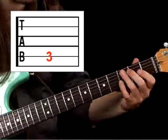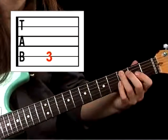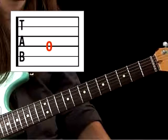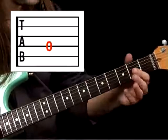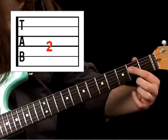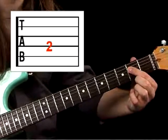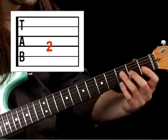it's going to be three, on the next string up from that we're going to have a zero, then we're going to have a two on that same string, then we're going to have a three,